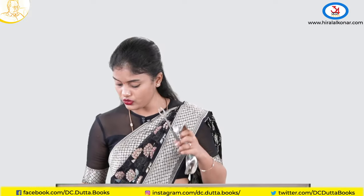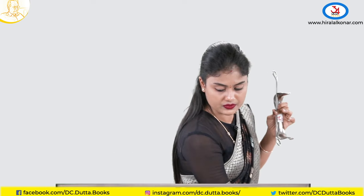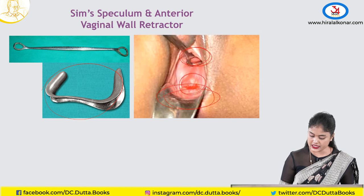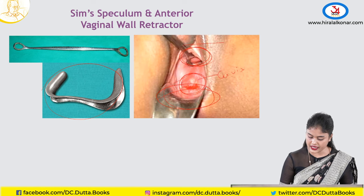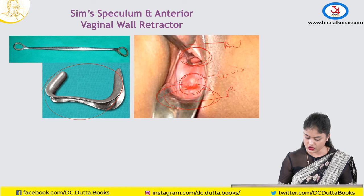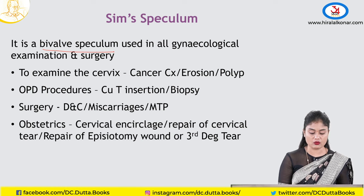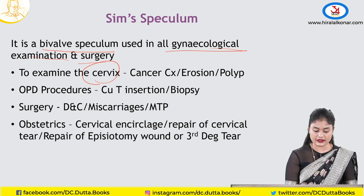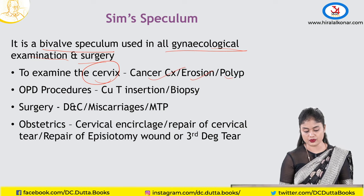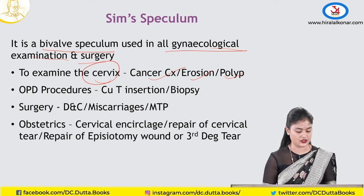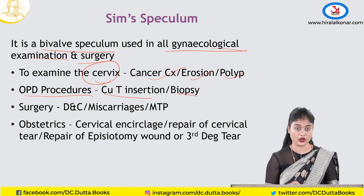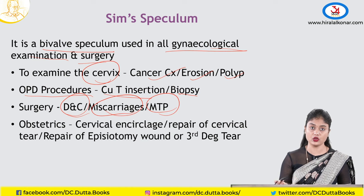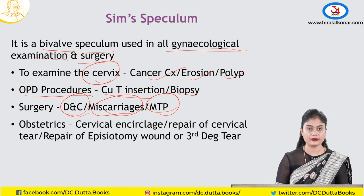In the exam, every student picks up this instrument. In the photo you can see how it is used — one retracts the posterior vaginal wall and the other retracts the anterior vaginal wall, allowing you to see the cervix. It is a bivalve speculum used in almost all gynecological examinations and surgeries — in OPD for examining the cervix in cervical cancer, erosion, or polyp, and for copper T insertion and biopsy.